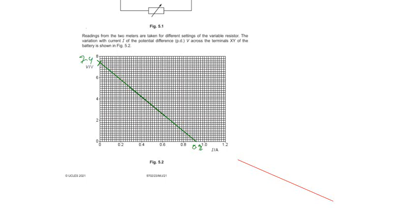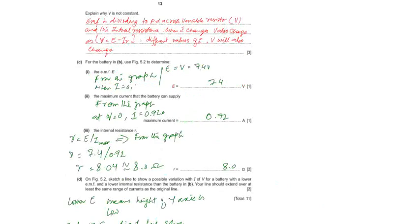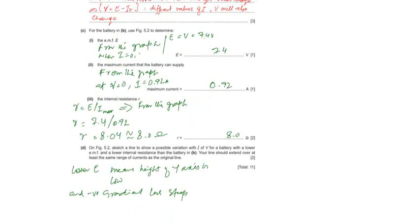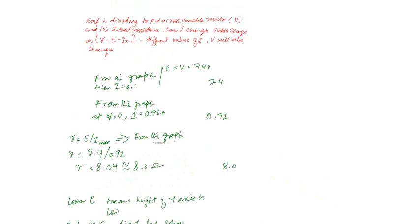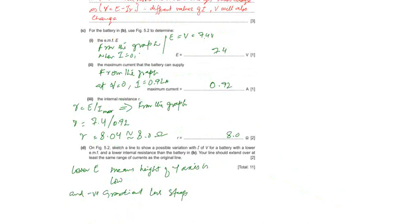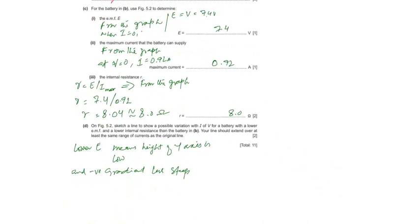Internal resistance is the negative gradient of the slope. This negative gradient is the internal resistance. You can easily find out internal resistance with the emf divided by the maximum current. EMF is 7.4 and the maximum current is 0.92, so it is 8.04, which is approximately 8 ohms. Internal resistance is the emf divided by maximum current.